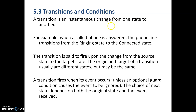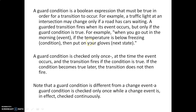The transition is said to fire upon the change from the source state to the target state. The origin and target of a transition usually are different states but may be the same. An object can go through different states during its lifetime. A transition fires when an event occurs, unless an optional guard condition causes the event to be ignored. The choice of next state depends on both the original state and the event received.